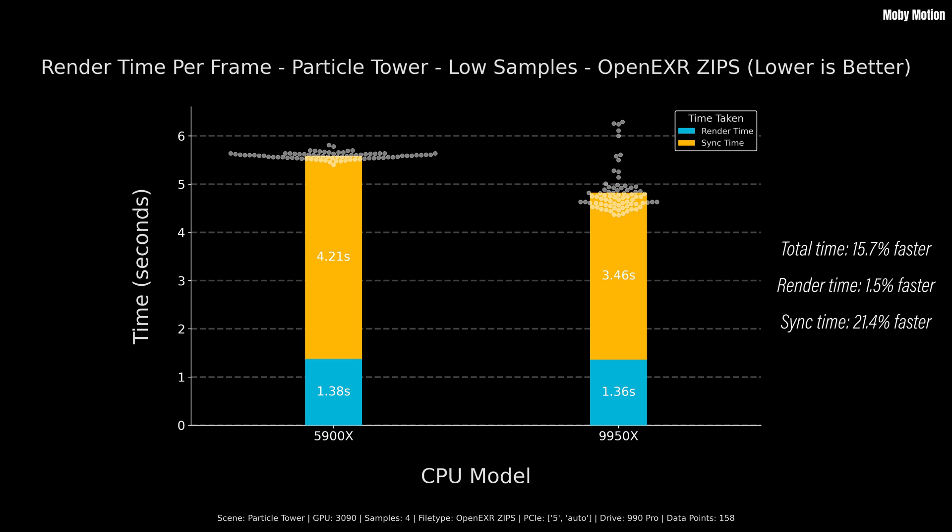If you look on top of the bar charts, each white circle is the total render time of an individual frame — 158 different data points here. For the 9950X, some frames took much longer than others. I'm still relatively new to benchmarking; this is most likely a background process that slowed down some frames. In future benchmarks I'll shut down background processes. But even with that, it only affected the 9950X, and it's still faster.